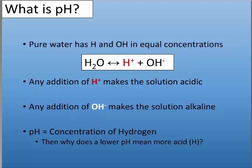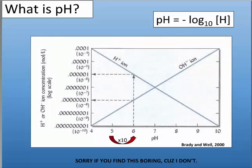You need to understand what pH is. Pure water is H₂O. If you split it, you have H⁺ and OH⁻. H⁺ is the acid and OH⁻ is the base. Any addition of H⁺, such as hydrochloric acid, makes it more acidic. Adding something like sodium hydroxide makes it more basic or alkaline. pH is a measure of the concentration of hydrogen. As you go from pH 4 to 10, you decrease in hydrogen concentration. At pH 7, you have equal concentrations of acid and base, so that's why we call it neutral.